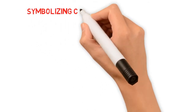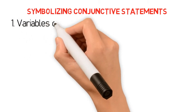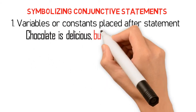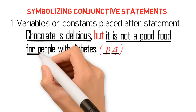I have been symbolizing statements here and in my previous editions, but it is not until now that I will specifically talk about symbolizing statements. Firstly, logicians usually put the variables or constants that will represent the statement right after the statement per se. In this example — 'Chocolate is delicious, but it is not a good food for people with diabetes' — the variable P represents the first component statement, 'chocolate is delicious', while Q represents the second component statement, 'it is not a good food for people with diabetes.'